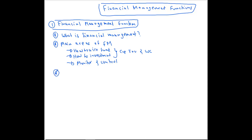Next, you should know the difference between financial accounting, management accounting, and financial management. Financial accounting is very simple — it is recording whatever things happened in the past. That is something like financial reporting — you are preparing income statements, balance sheets, and cash flow statements. Those things happen in financial accounting.